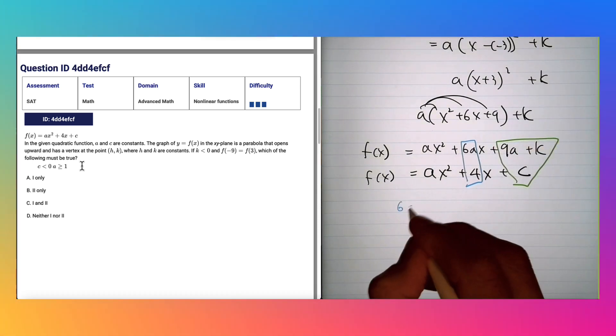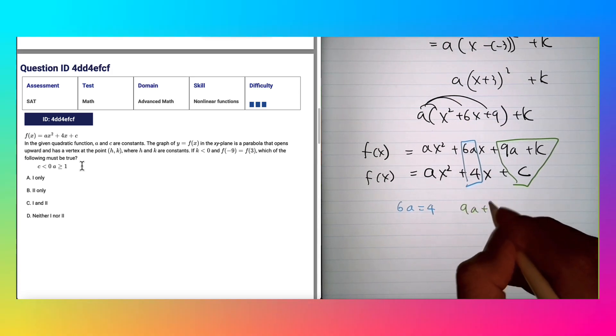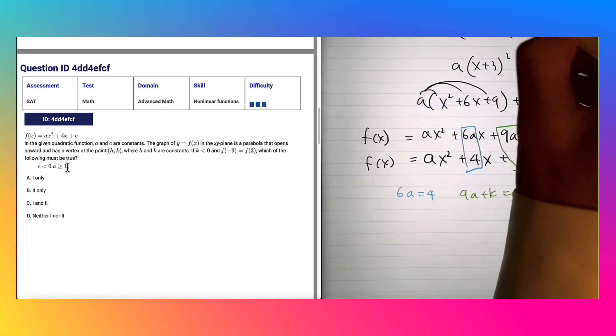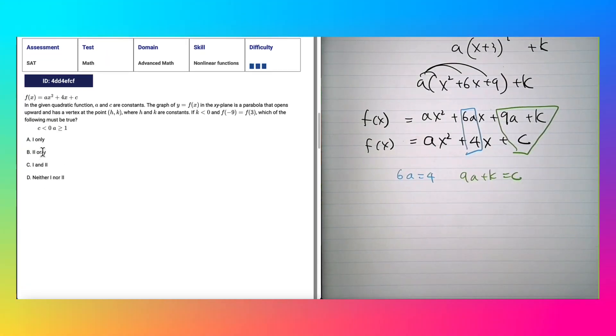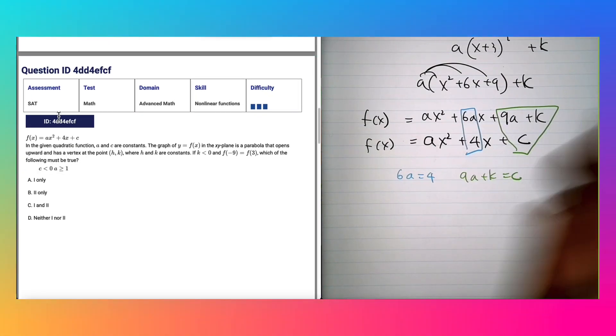So why don't we say that 6a = 4 and 9a + k = c. We're going to need both to determine the first condition or second condition. One thing I didn't talk to you guys about is that there's a printing format. There's an error that they really should have written.